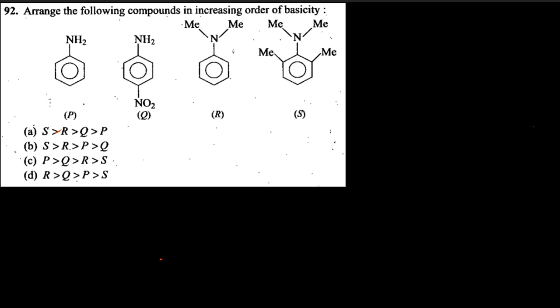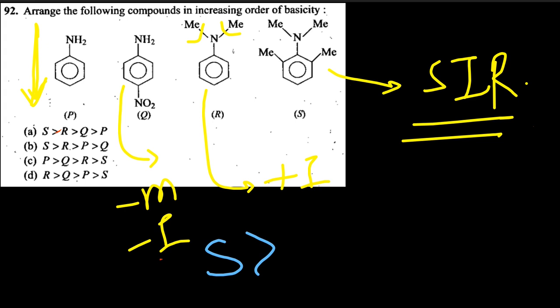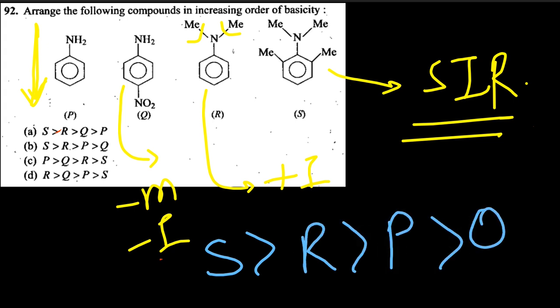Arrange the following in increasing order of basic strength. Aniline is there; this will withdraw electrons strongly via the benzene ring. Plus I effect, minus M effect are present in some, and SIR (steric inhibition of resonance) is present in another. SIR increases basic strength considerably. So the order is S > R > P > Q, option second is correct.